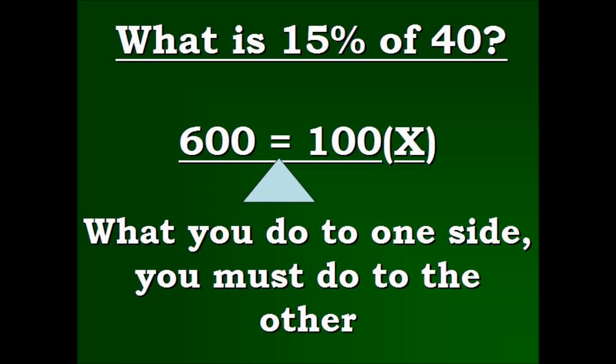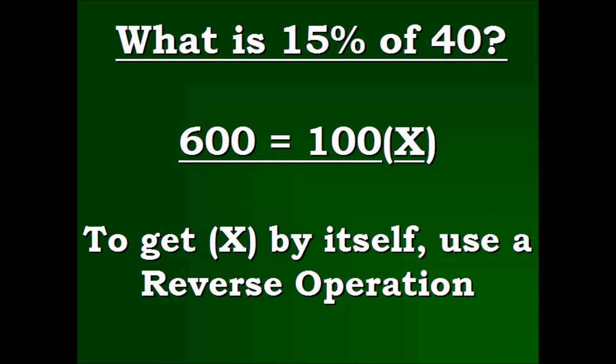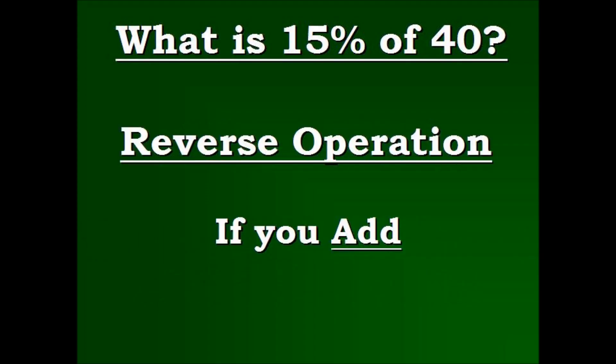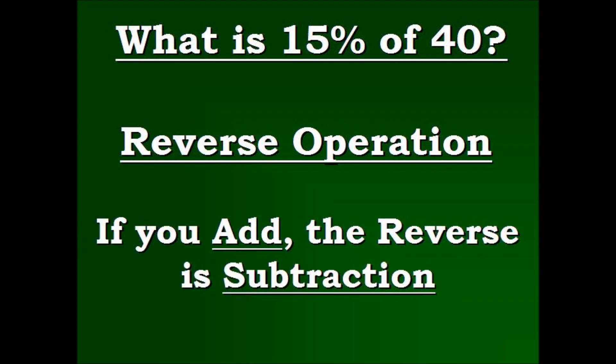Again, what you do to one side, you must do to the other. You must keep both terms balanced. So what we're going to do to get x by itself is we're going to use a reverse operation. A reverse operation is just simply if you add, then you subtract to get the reverse or to cancel out the first operation.